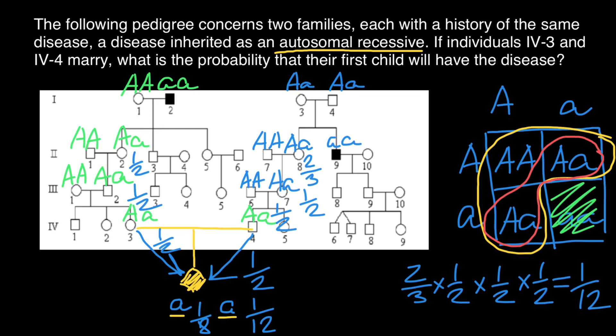This is not the end of our calculations. We also have to multiply these two independent probabilities: one eighth times one twelfth is going to be one over 96. And this is going to be our answer.